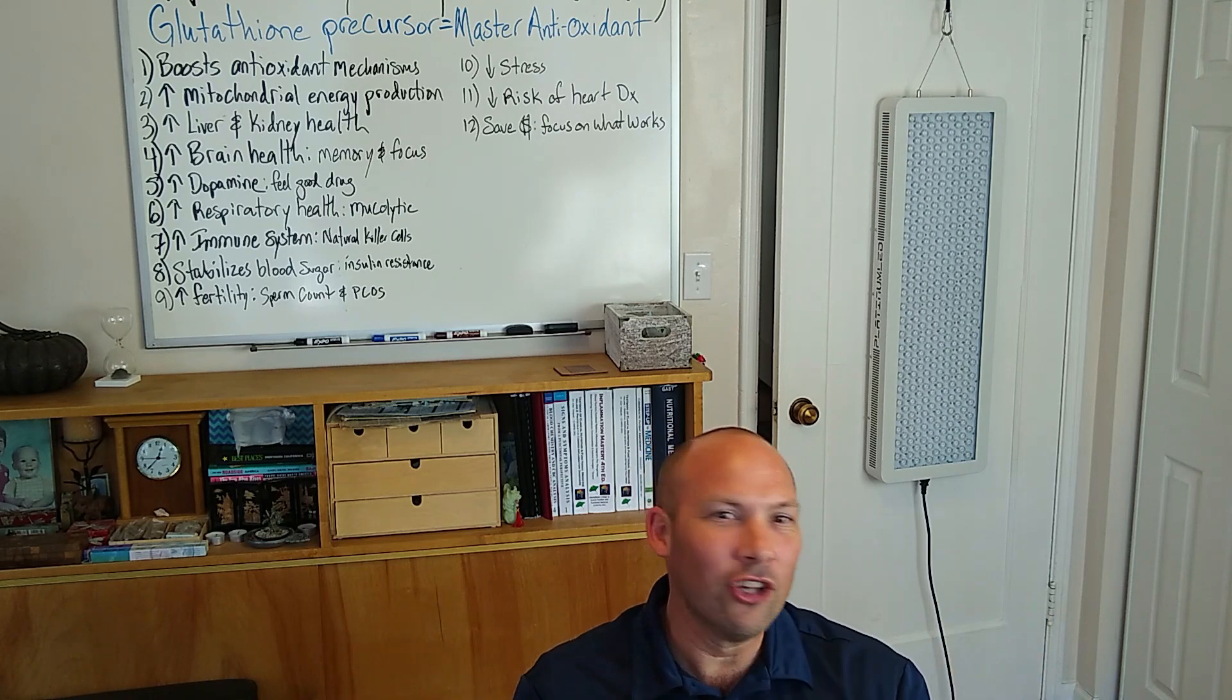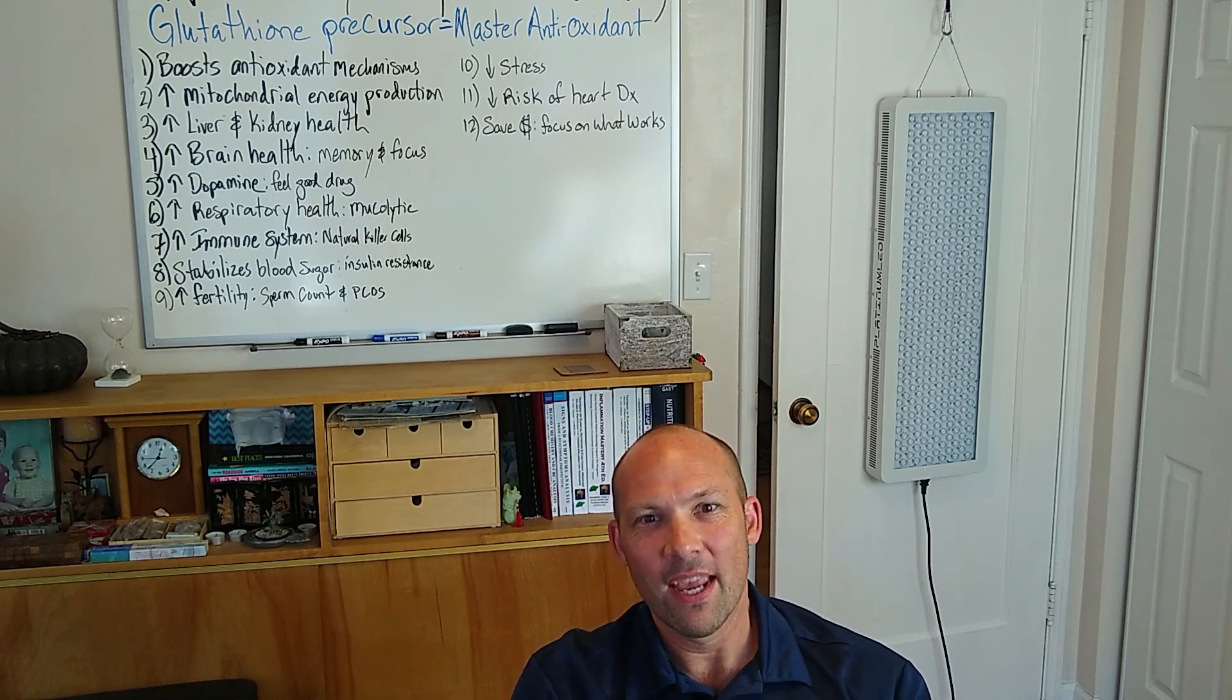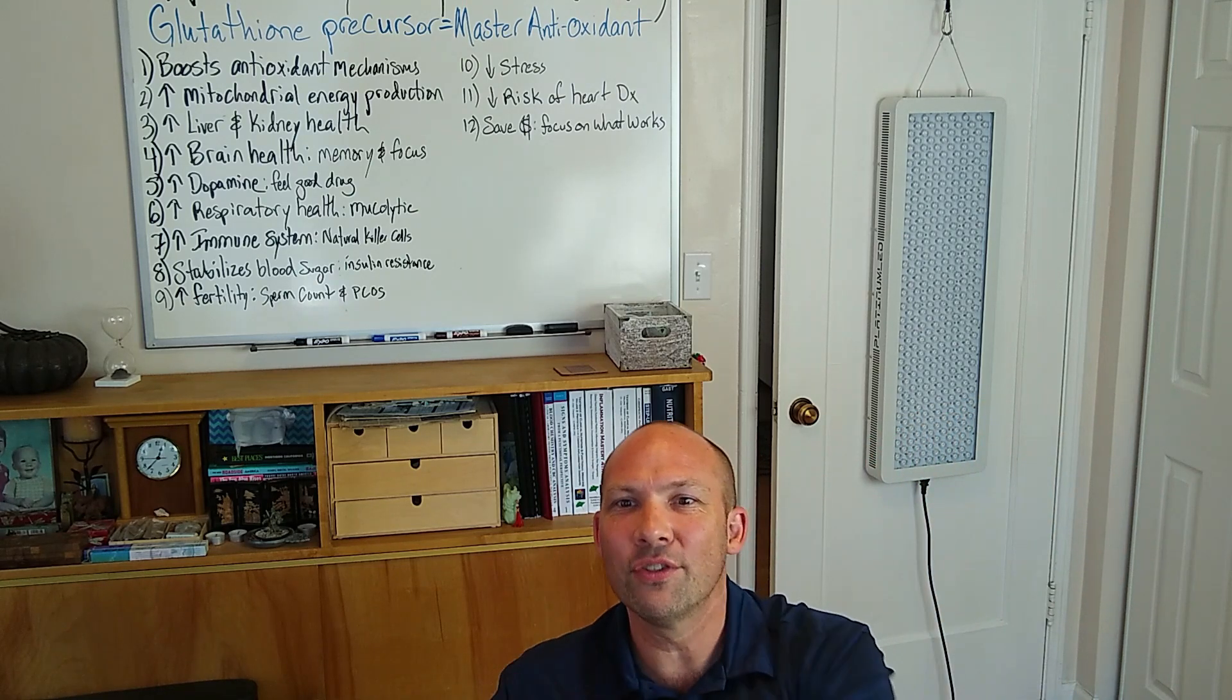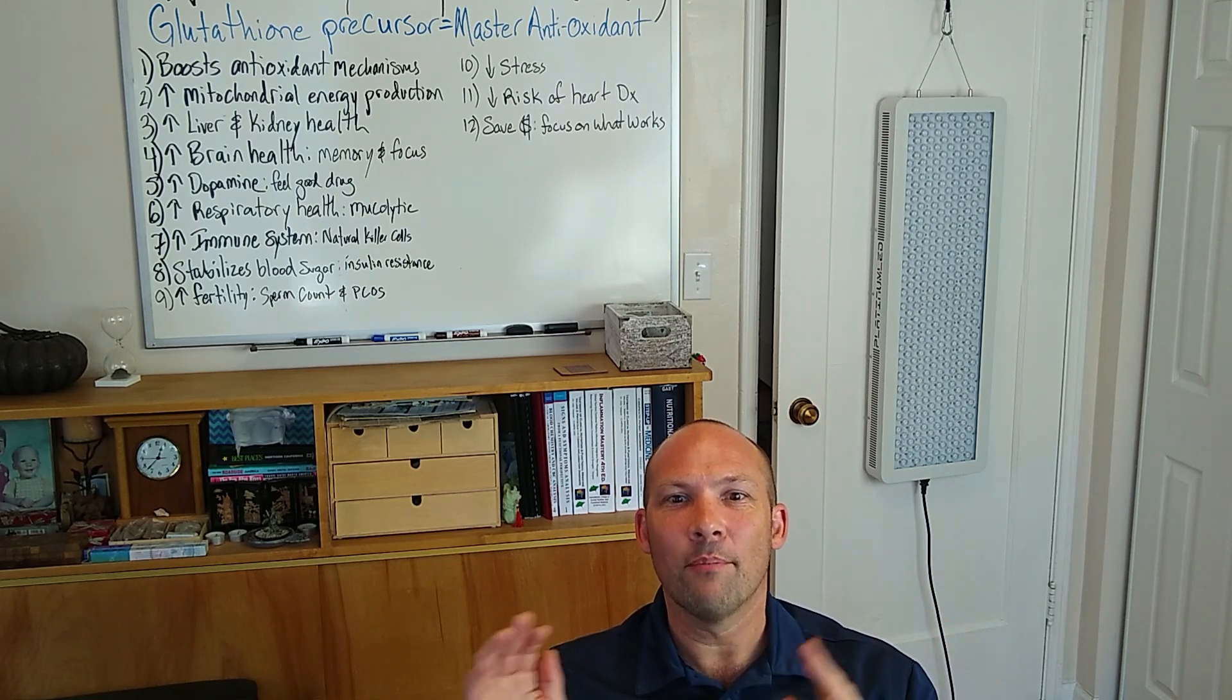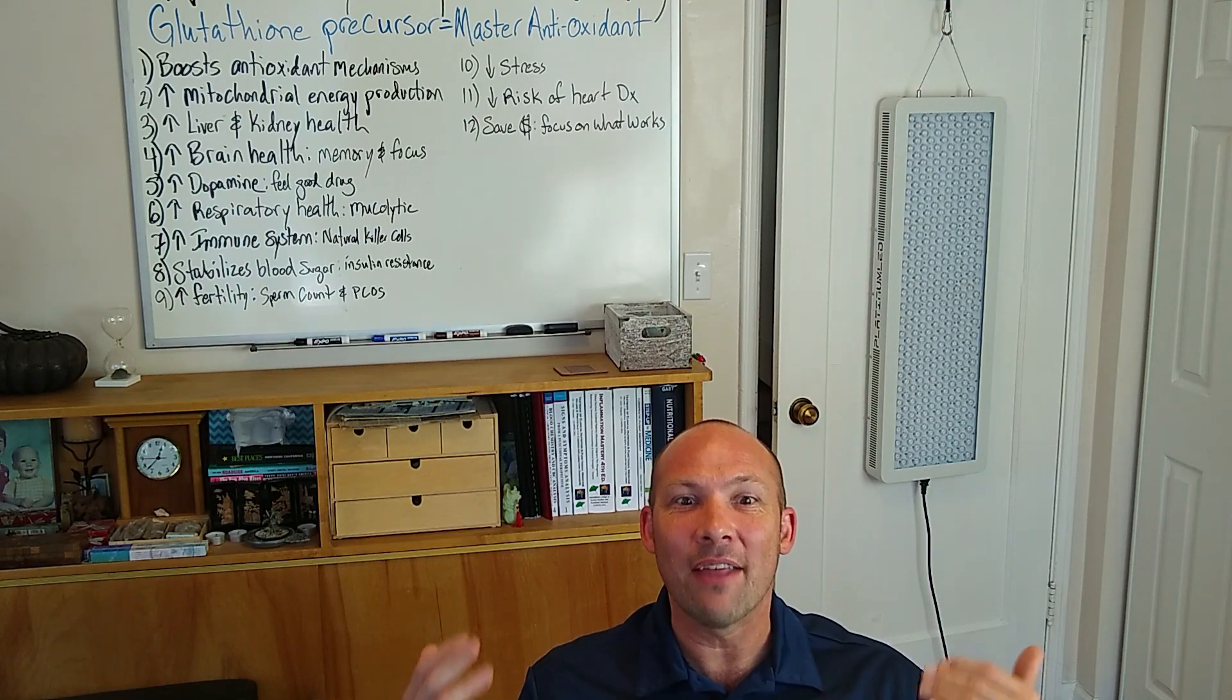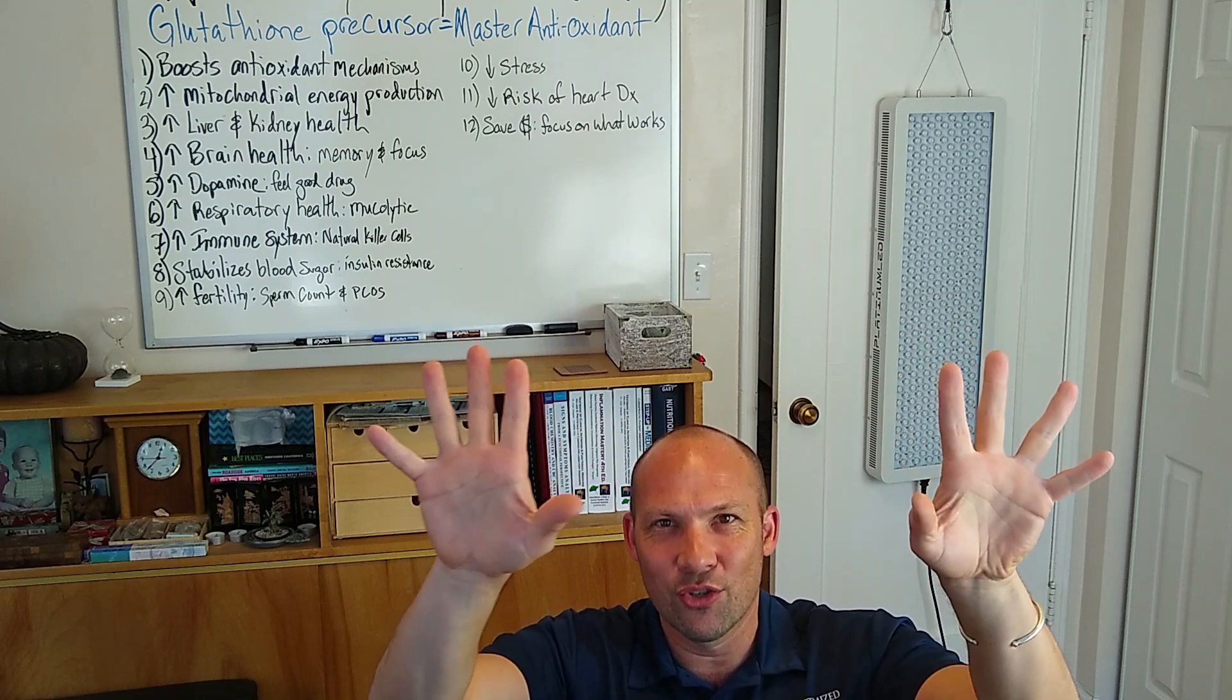Glutathione detoxifies a large number of pollutants, carcinogens, heavy metals, herbicides, pesticides, and radiation. N-acetylcysteine, or NAC, which is the precursor to glutathione, raises glutathione levels and has been used to detoxify organic mercury. Oral NAC profoundly accelerates urinary methylmercury excretion to levels as much as 10 times more than usual.